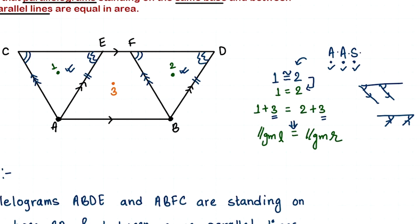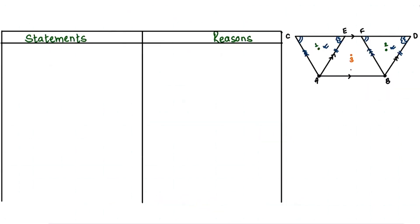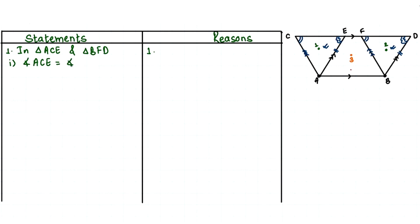Now we just need to write the same thing formally. I've copied a smaller version of the figure here since we need it. The proof uses two columns — statements and reasons. The triangles we are working with are triangle ACE and triangle BFD. In triangle ACE and triangle BFD, the first statement is that angle ACE is equal to angle BFD.